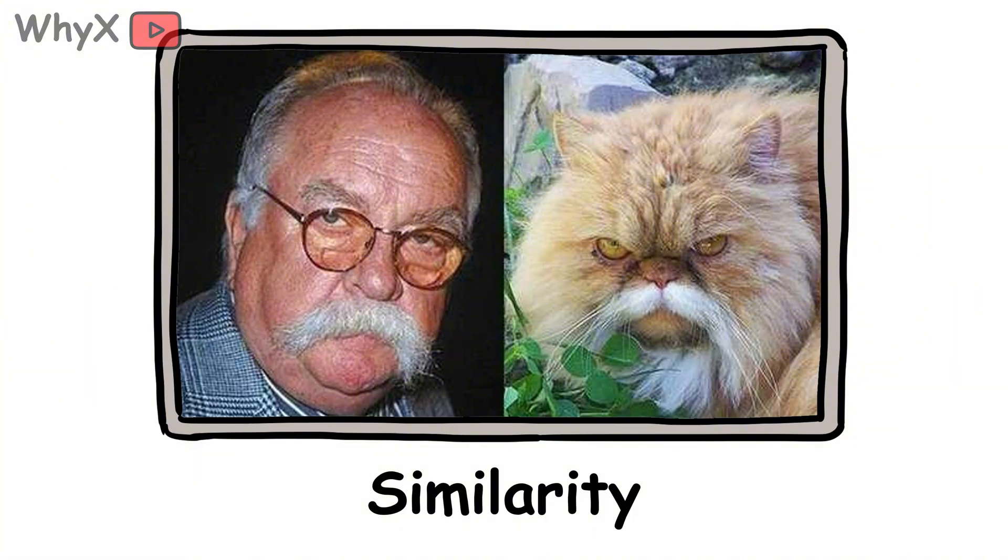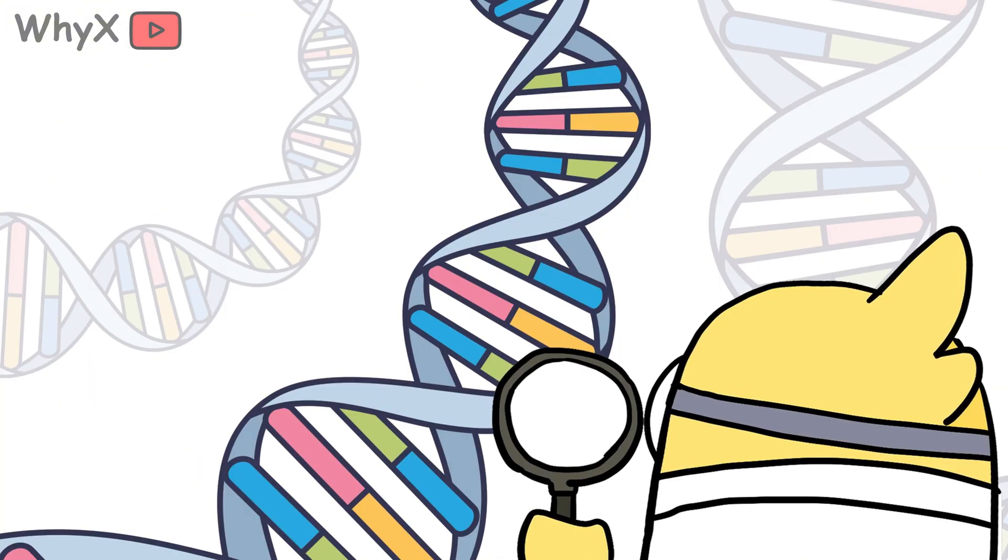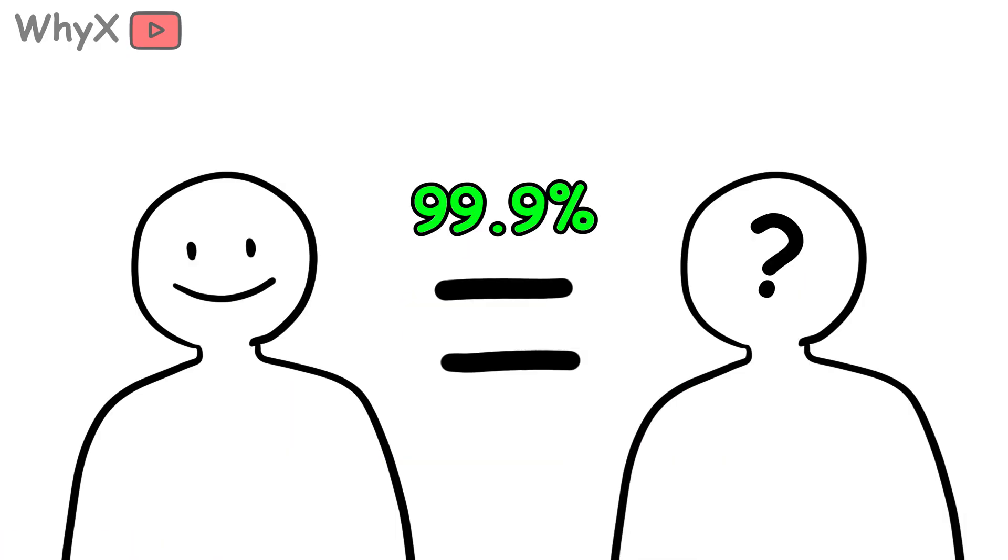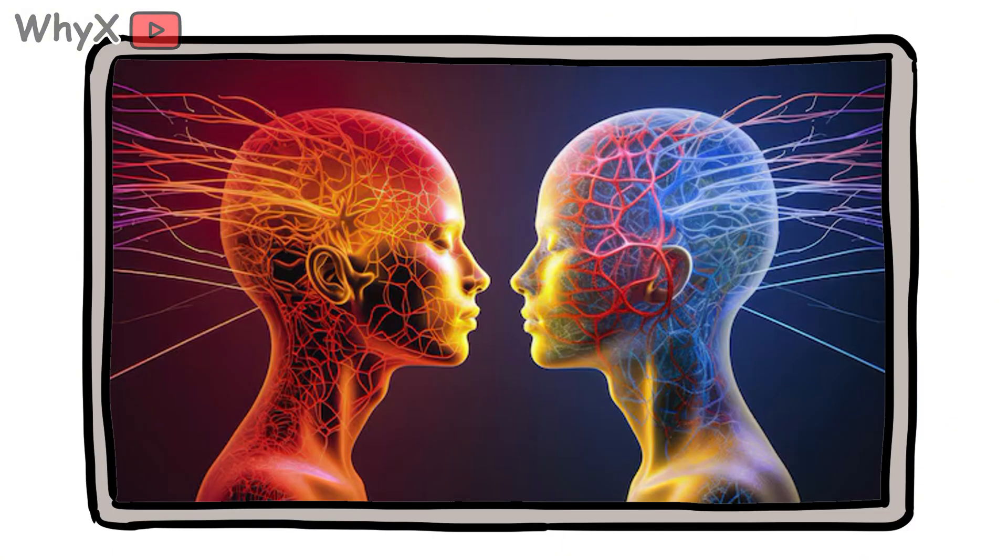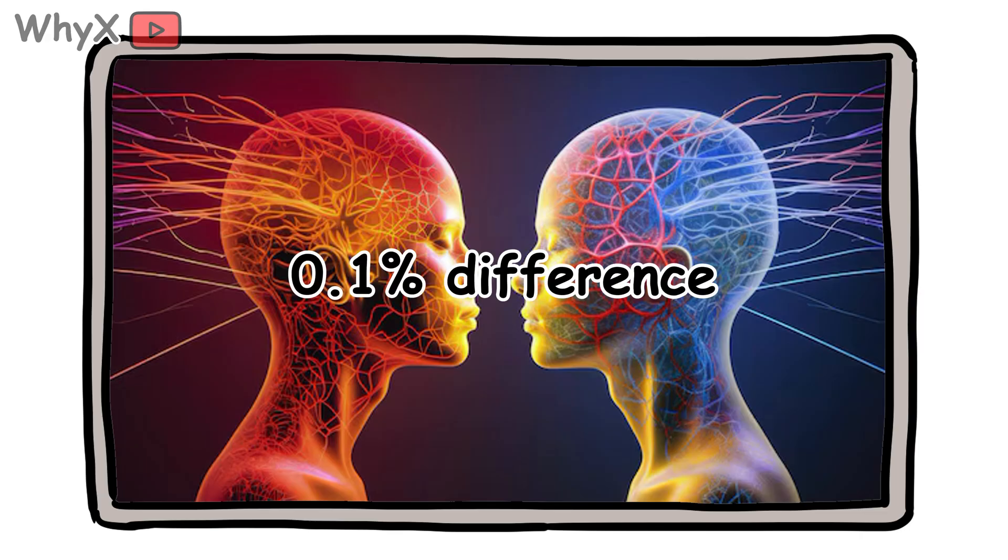Now let's talk about similarity. You probably think your DNA makes you unique, and it does, but you're not as different from others as you might imagine. You share about 99.9% of your DNA with any random human on Earth. That means the entire diversity of humanity, from sumo wrestlers in Japan to surfers in California, comes from a measly 0.1% difference.